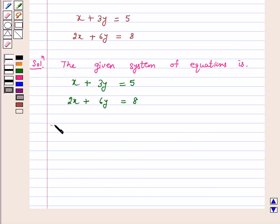The above system of equations can be written in the form AX is equal to B where